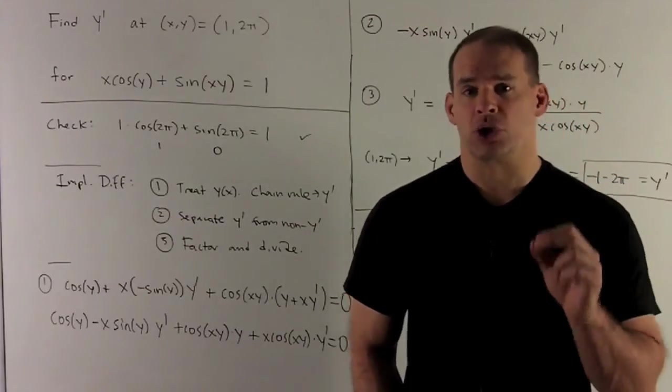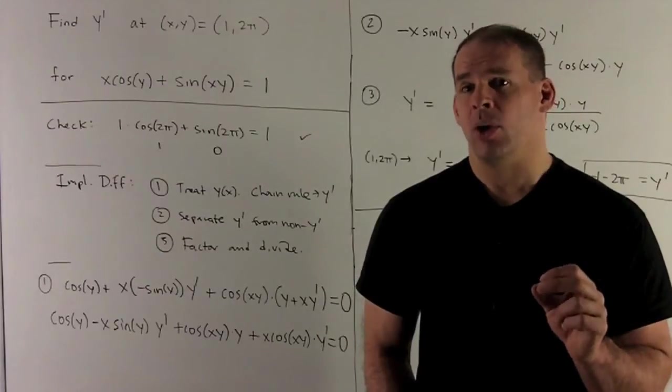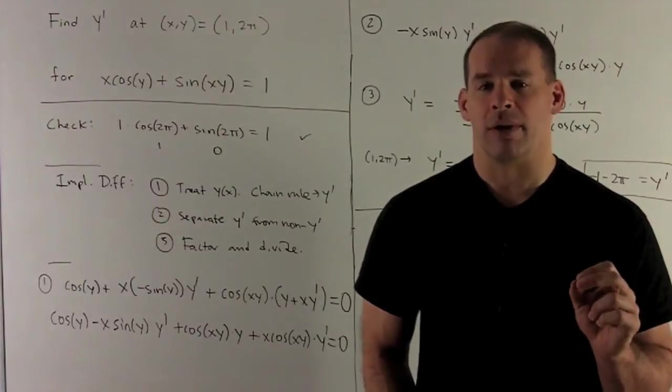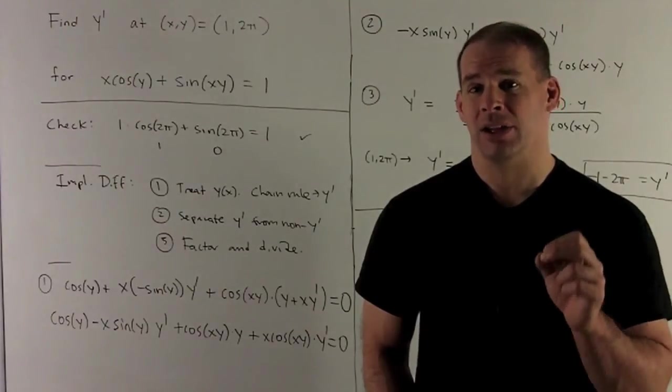So the idea is, we're going to treat y as a function of x, and then whenever I take a derivative in my equation, wherever I have a y, I have to apply the chain rule by multiplying by y prime.